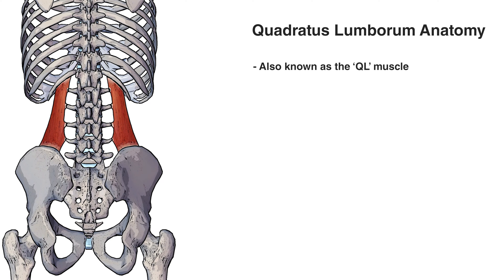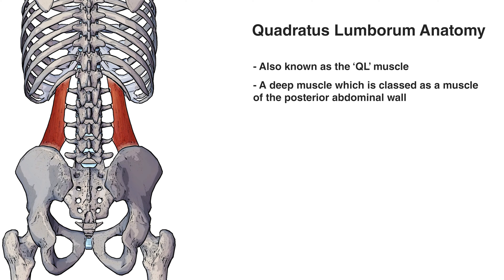The quadratus lumborum, although located in the lower back region, isn't actually classed as a lower back muscle. This is because it's such a deep muscle, it's actually classed as a muscle of the posterior abdominal wall.